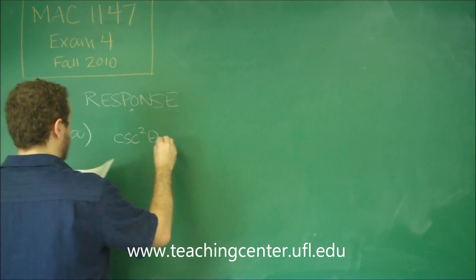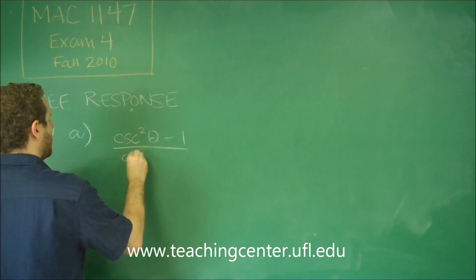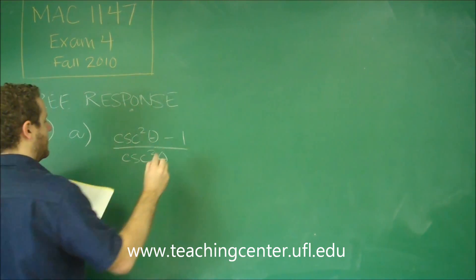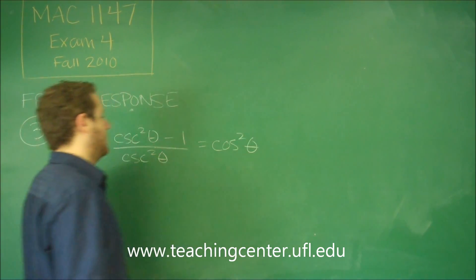So we're starting with the following for 3a. We have cosecant squared theta minus one over cosecant squared theta. And we want to show that that is the same thing as cosine squared of theta.